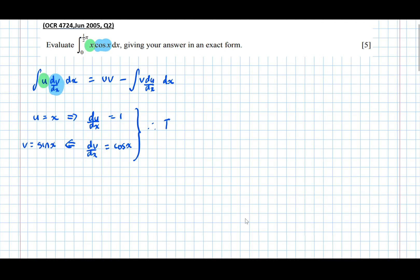Therefore, I, which stands for integral, equals uv. So equals x times sin x uv minus the integral of v times du by dx. So the integral of sin x times 1, which is just sin x dx, which is equal to x sin x minus, and the integral of sin x is minus cos x, so double minus makes a plus.